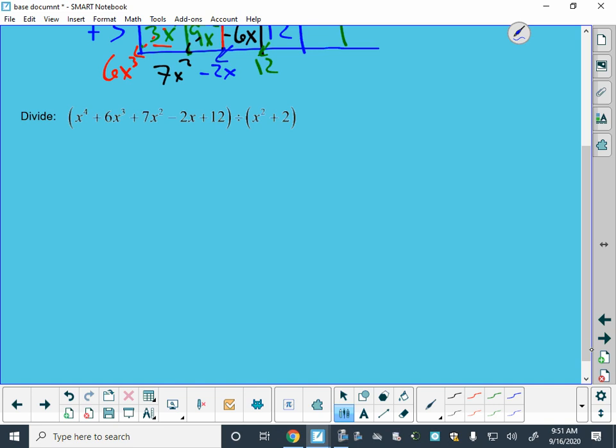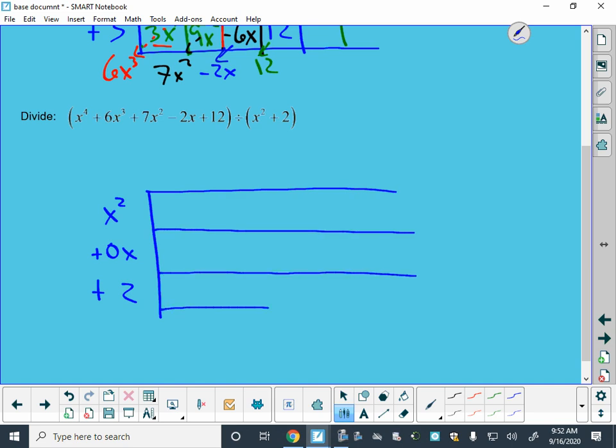But if I don't leave a place since I have that missing power of x, I have a second power and a zero power, I don't have the first power. If I don't leave a space for it, then my diagonals don't line up. And so I want to make sure that I leave that space on this side. So I'm going to call it x squared plus 0x plus 2.